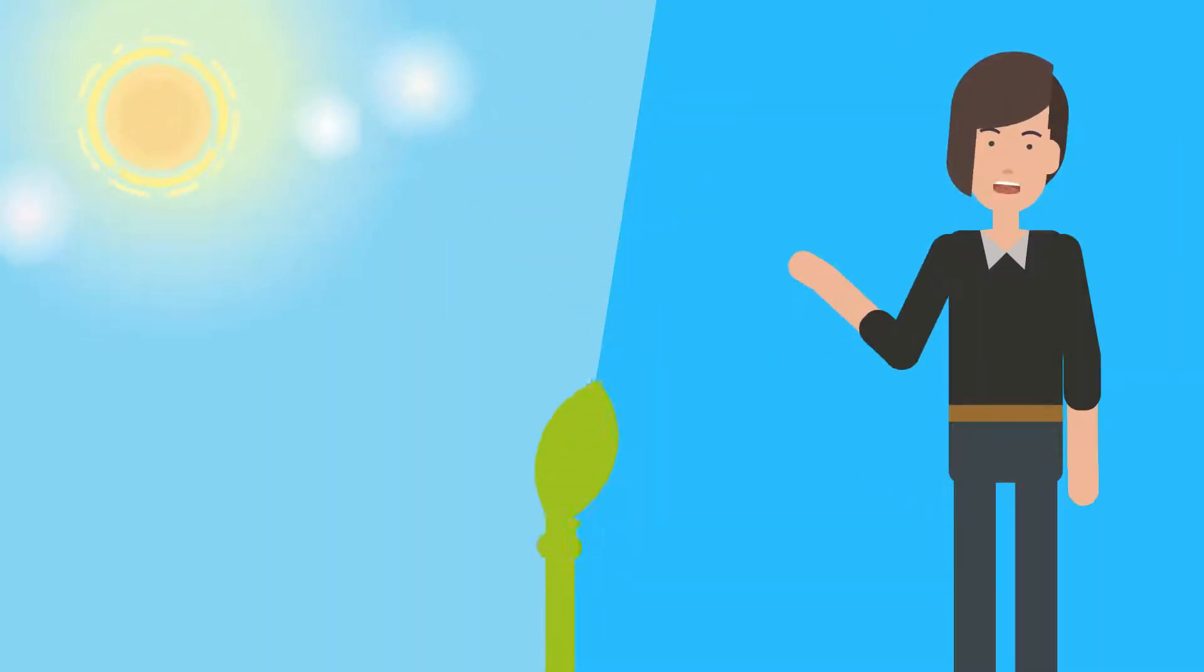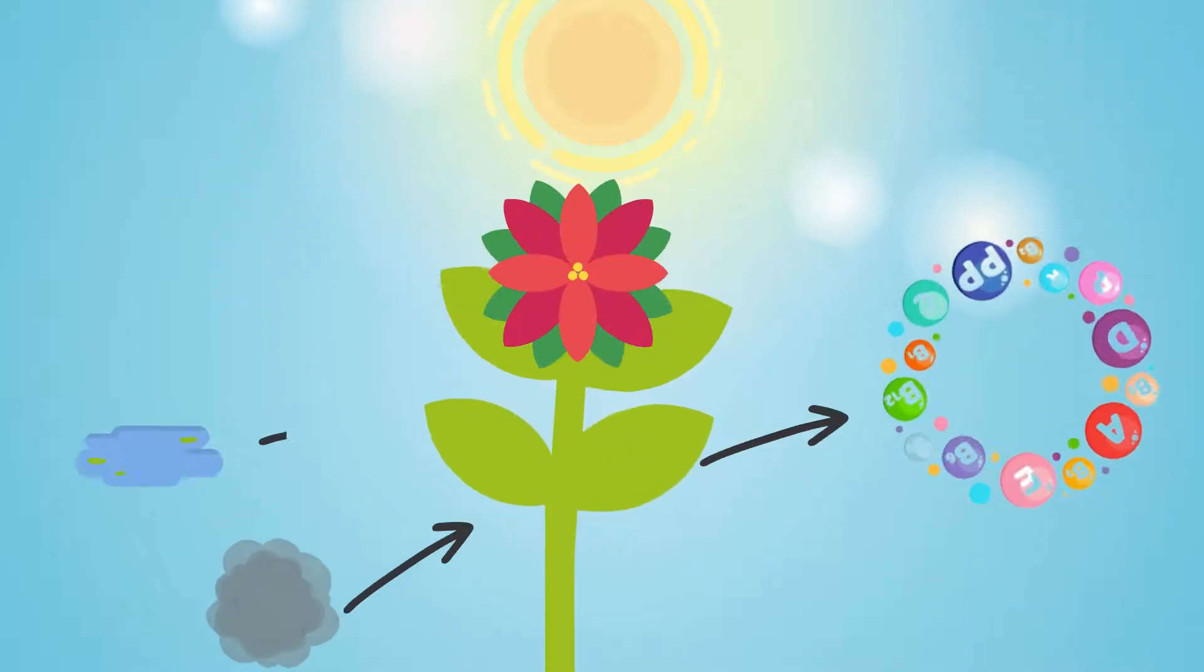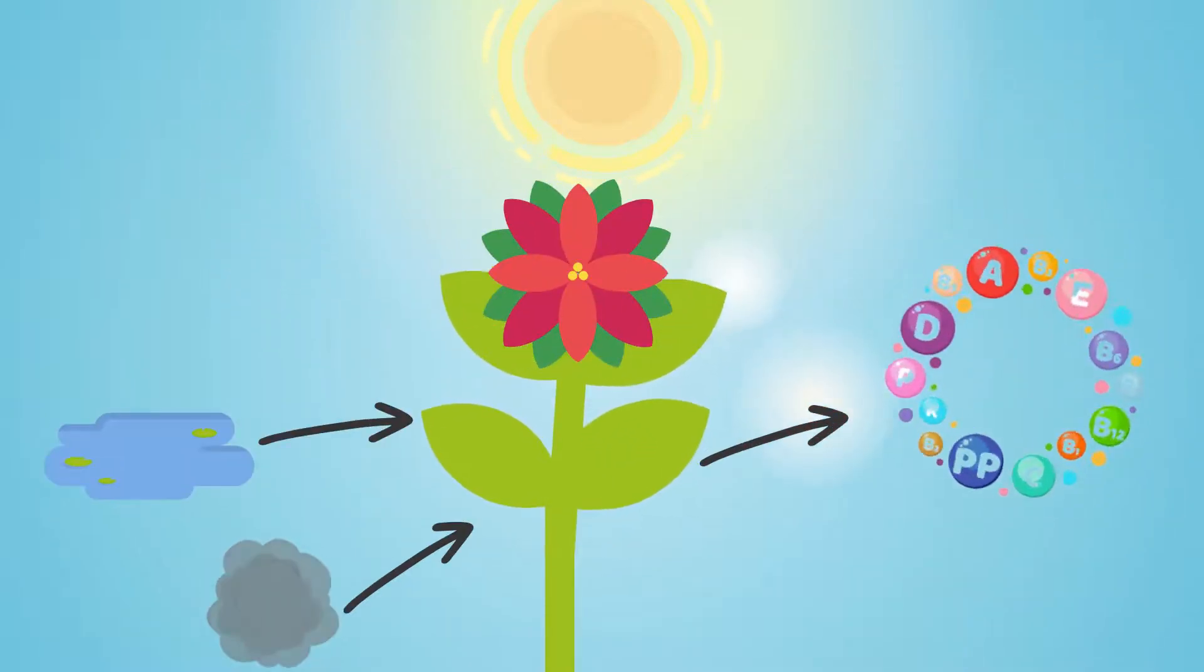Most plants are autotrophs, and they use the process of photosynthesis to obtain the energy they need to grow and thrive. This means they use sunlight to synthesize nutrients from carbon dioxide and water for them to live on.